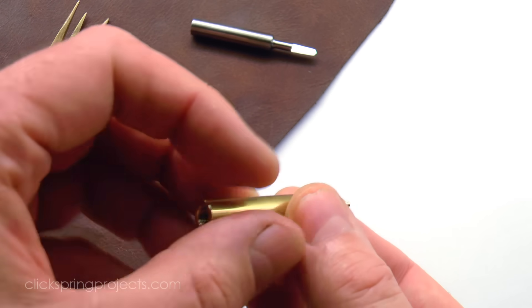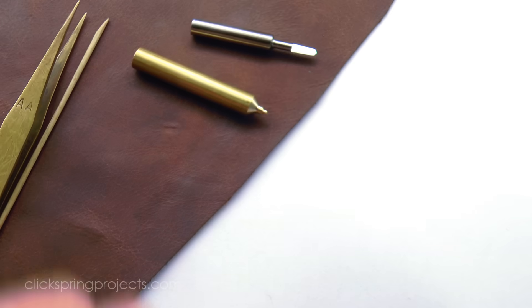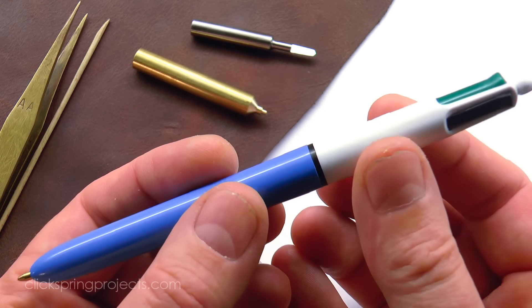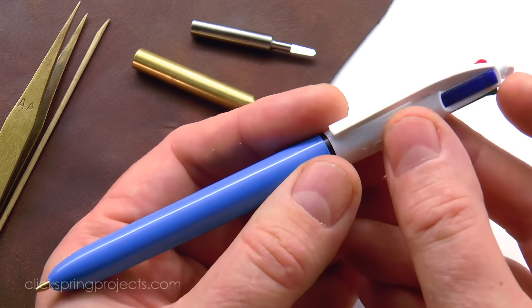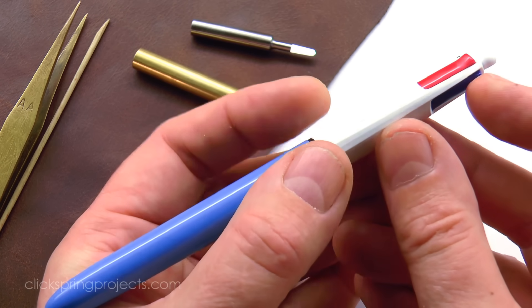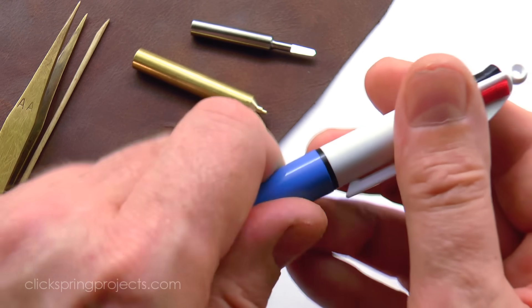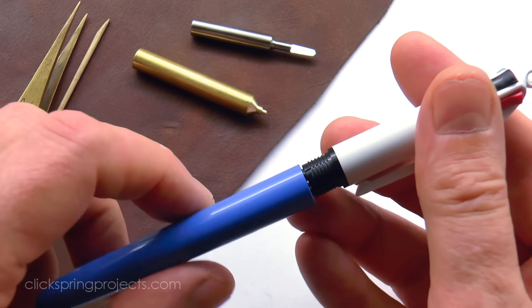I've covered the process of making springs in some other videos, but this tool is a good case of being able to simply scavenge one from another object to save the trouble. In this case from a spring-loaded pen.